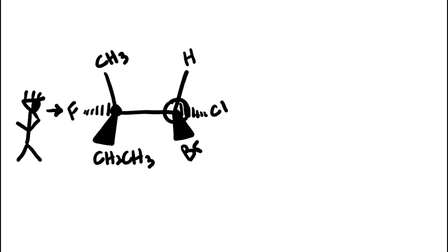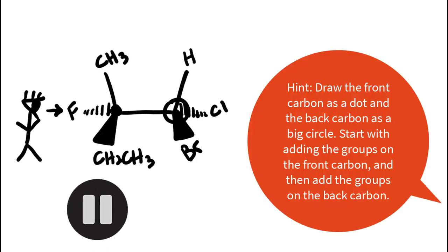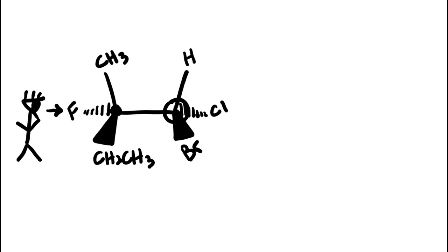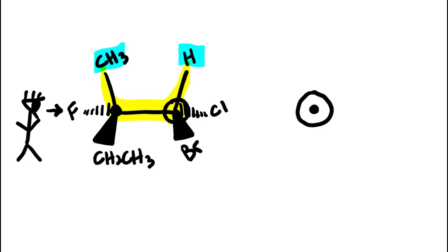Here we have an eclipsed conformation for you to practice drawing the Newman projection. First we want to identify the front carbon and the back carbon. If we trace the backbone, we can see this is indeed an eclipsed conformation — the two substituents in the plane are both pointing in the same direction: the methyl and the hydrogen are both pointing up. We're going to start by drawing a dot for the front carbon and a big circle behind it for the back carbon. From cyclops man's perspective, straight up he's going to see the methyl group, so we draw CH3 straight up on the front carbon.